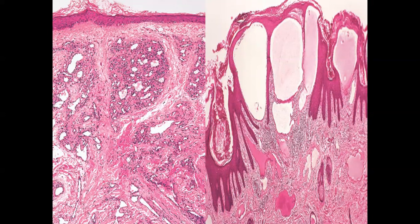Two vascular tumors are shown: on the left, multiple nests of small capillaries — this is pyogenic granuloma. On the right, several large vascular channels lined by a single layer of endothelium filled with serous fluid — this is a hemangioma.